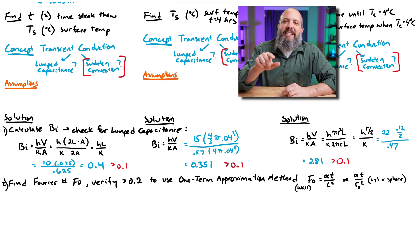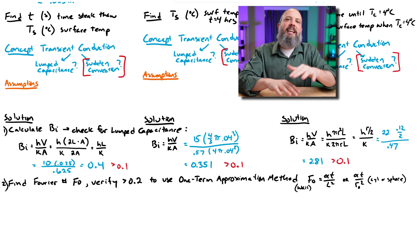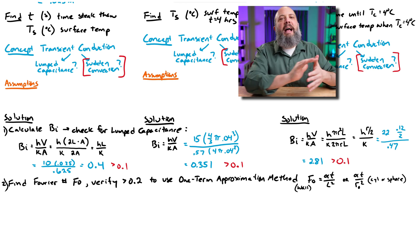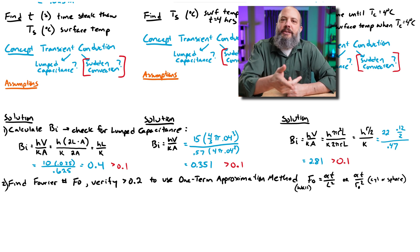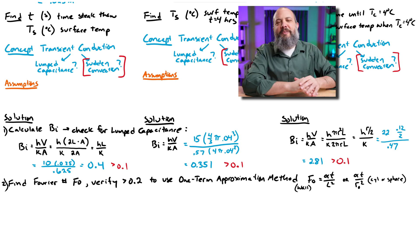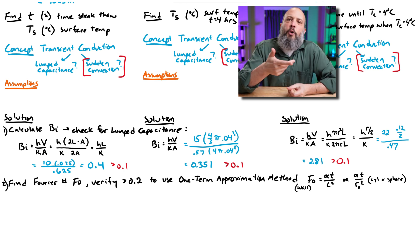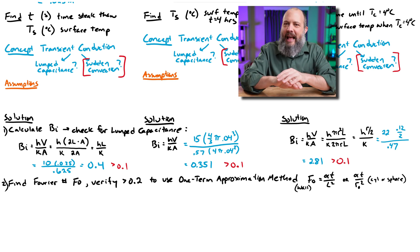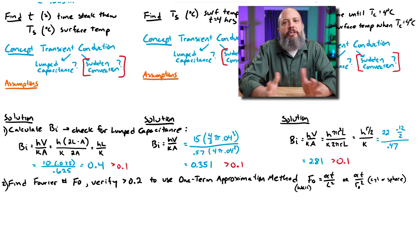The one-term approximation method does not account for the sudden shock at the very instant the temperature changes — it does not give you the first reaction. As time passes and you get closer to steady state, that's when it becomes valid. In this problem involving freezing or thawing, we're not interested in what happens immediately upon a temperature change; we're interested in what happens over a period of time. So we do expect this method can be used, but we still need to verify.